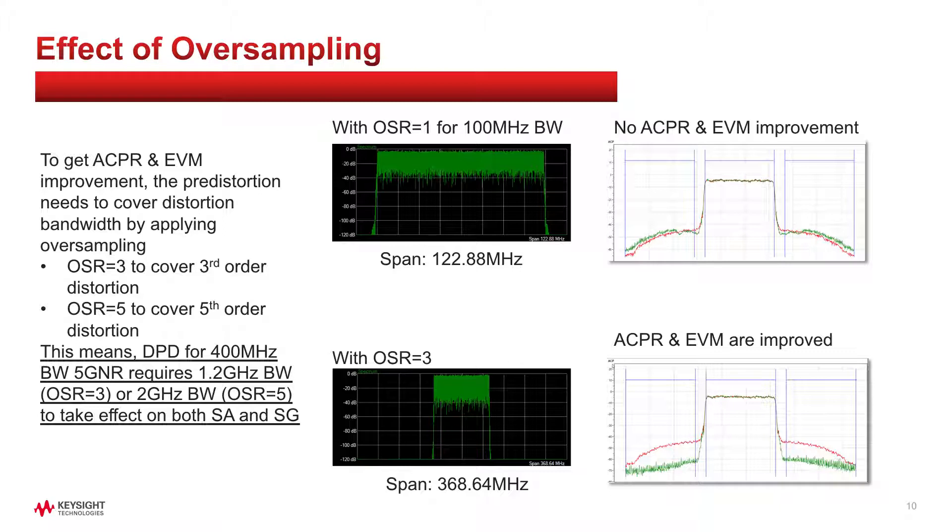After applying 3 times higher sample rate, you can get ACPR improvement with DPD.